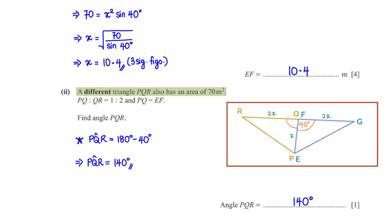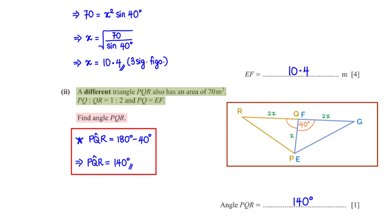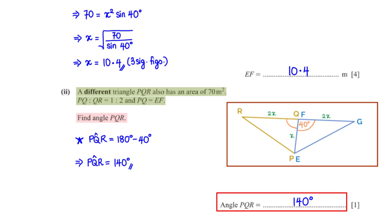A different triangle PQR also has an area of 70 m², with PQ to QR = 1 to 2 and PQ = EF. Find angle PQR. Angle PQR = 180° minus 40° = 140°. Since sin 40° and sin 140° return the same value, plugging in the same lengths with 140° into the area formula still gives 70 m².